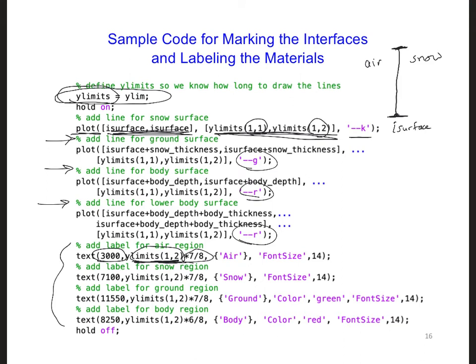And I did it, I put it at 7 eighths across the grid. So in the y direction, if this is the full dimension, 8 over 8, I put the label just below the top of the grid, in the y direction. And so the other labels as well. And I made the font the same color as the lines for the body and the ground.